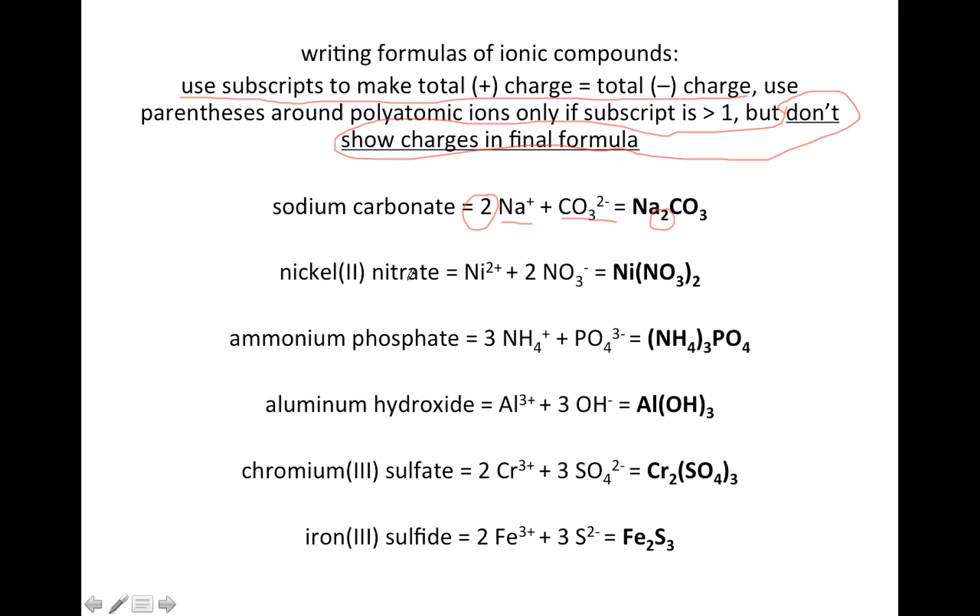Next example, nickel(II) nitrate. You need the Roman numerals because nickel is a transition metal. That tells you that the Ni is going to have a plus 2 charge. Nitrate always has a minus 1 charge, so you're going to need two nitrates to balance out the 2 plus charge in the nickel ions. This is what I was saying about polyatomic ions needing parentheses. Since there's two nitrates, you're going to put the nitrate in parentheses.